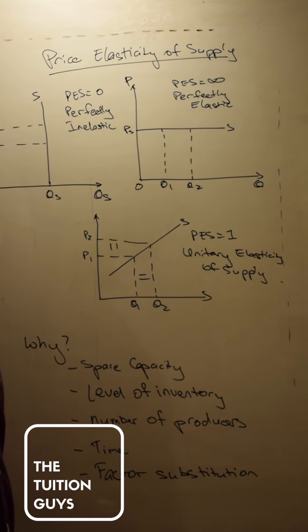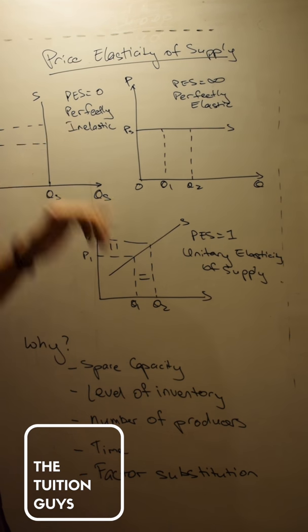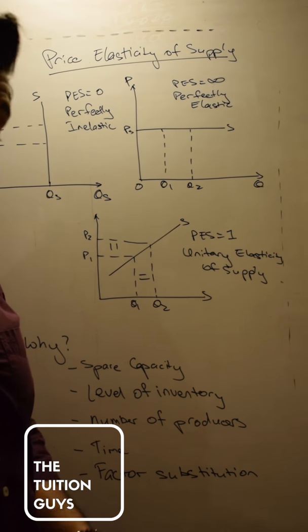If supply is perfectly inelastic, that means that no matter how high prices might go, the producer cannot make more of something. So quantity supplied will not shift. That means the PES is going to be zero.